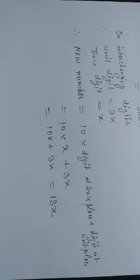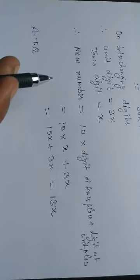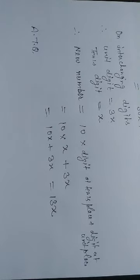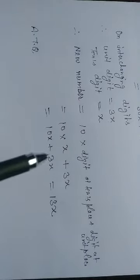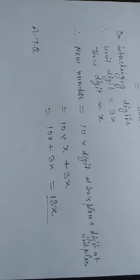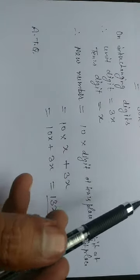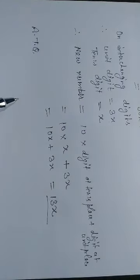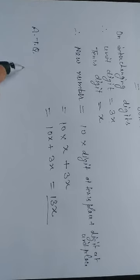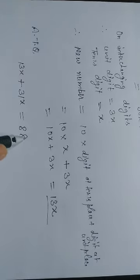According to the question, we need to interchange the two-digit number and add the resulting number to the original number. The result is 88. So, 13x plus 31x is equal to 88.